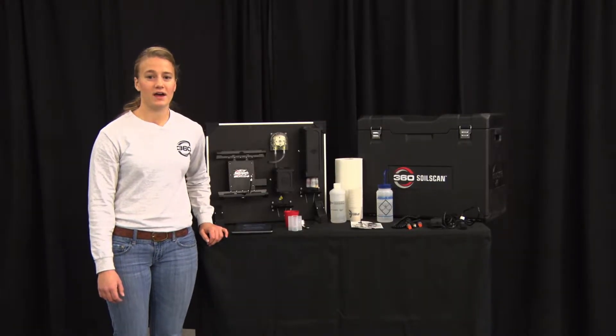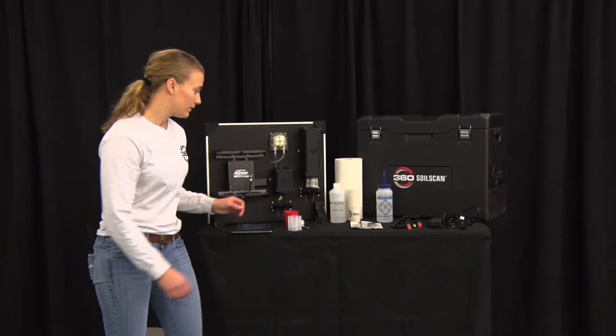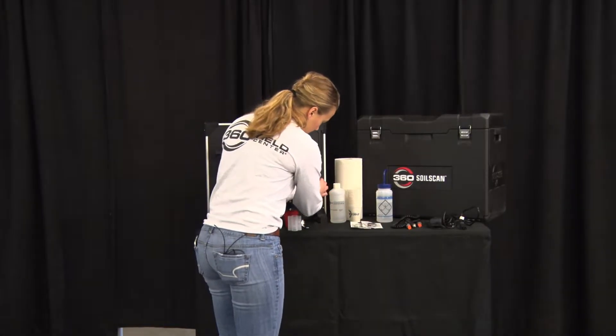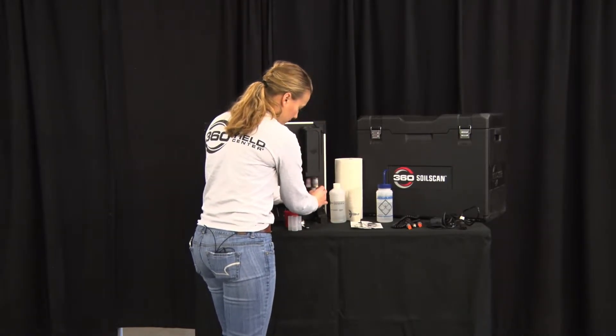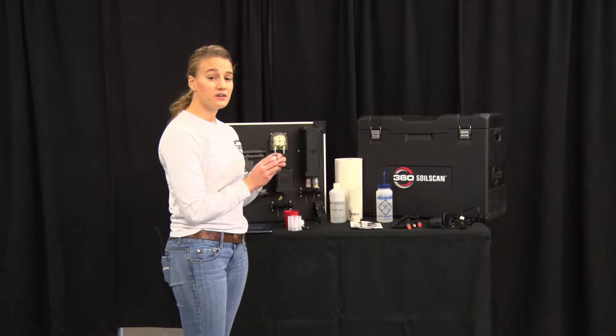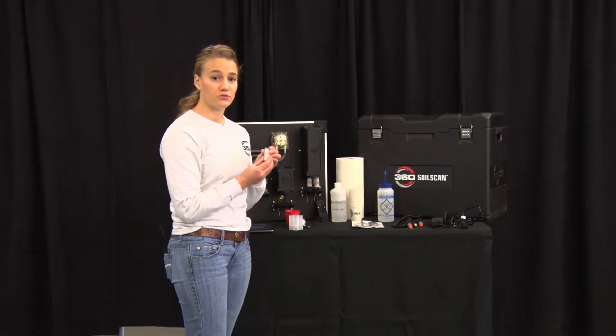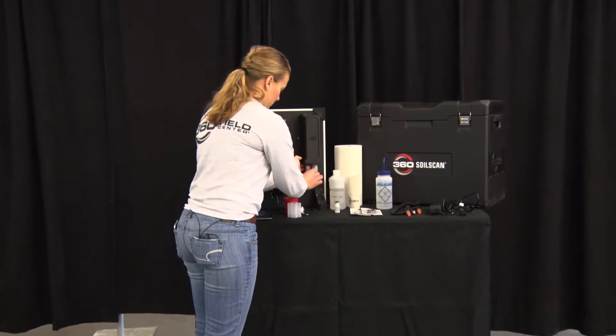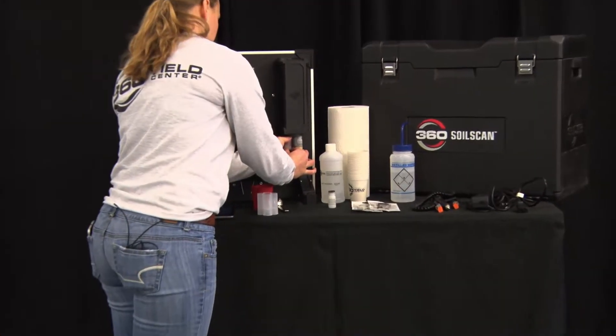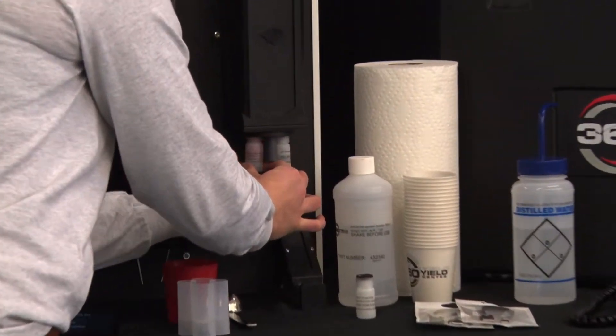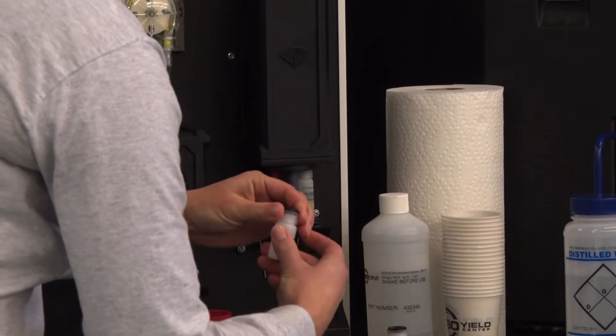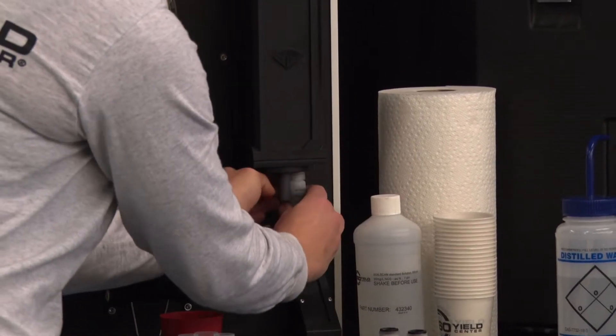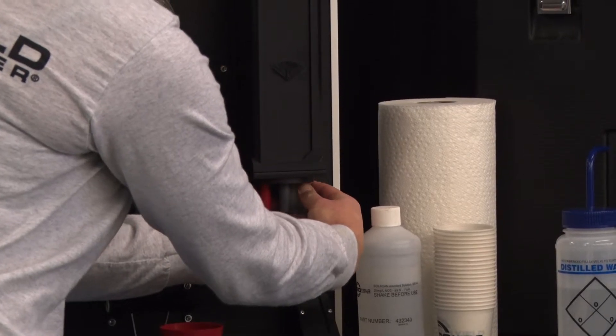If you're taking your SoilScan out of long-term storage you'll need to remove the long-term storage bottles. You do this by unscrewing the bottles and then sliding them off of the sensors. It's important to note that the gray nitrate sensor is stored dry. The red reference tip is stored in nitrate solution. And the black pH sensor is stored in nitrate solution as well.